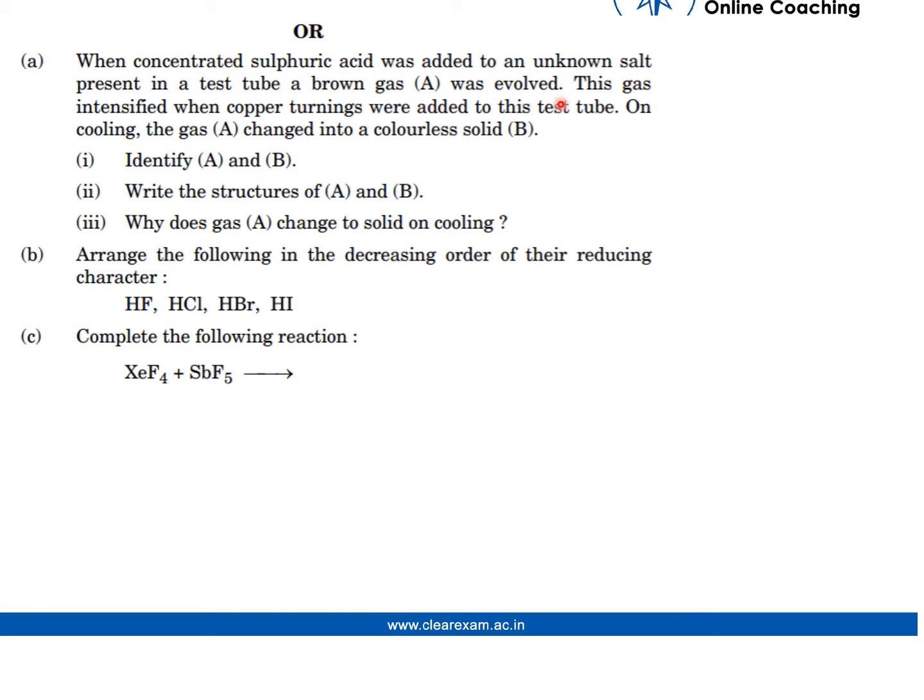This gas intensified when copper turnings were added to the test tube. On cooling, the gas A changed into a colorless solid B. We need to identify A and B, write the structures of A and B, and explain why gas A changes to solid on cooling.